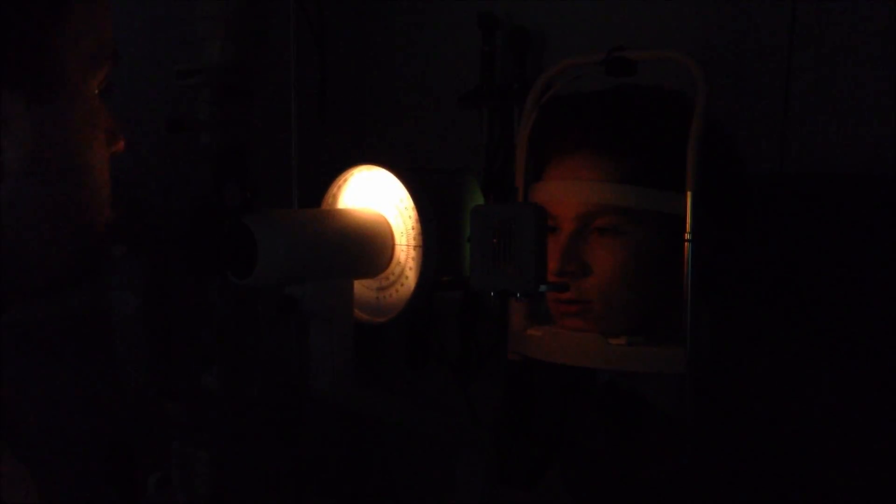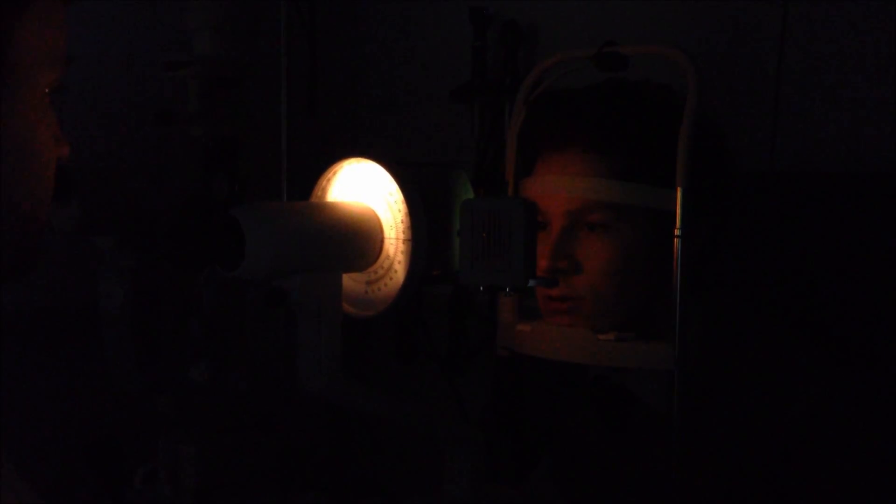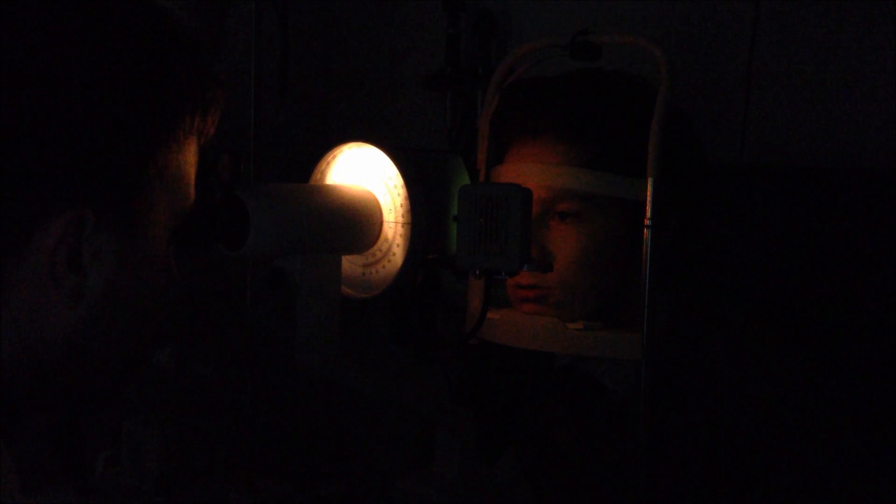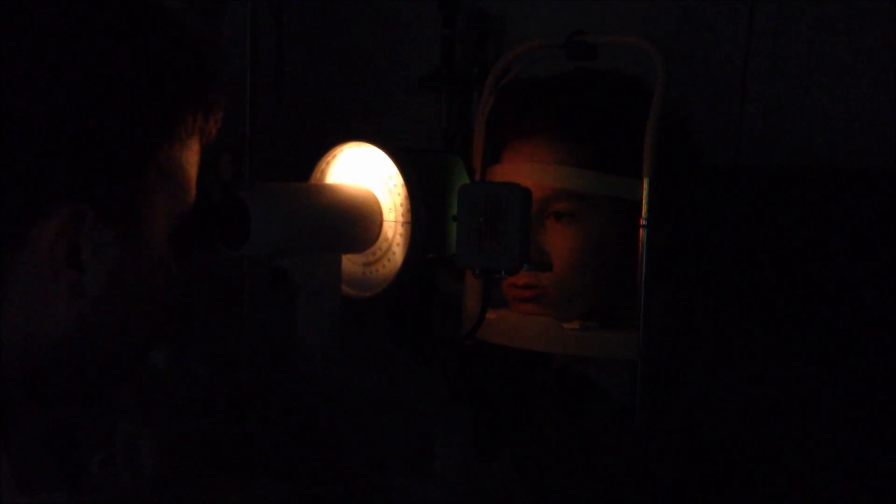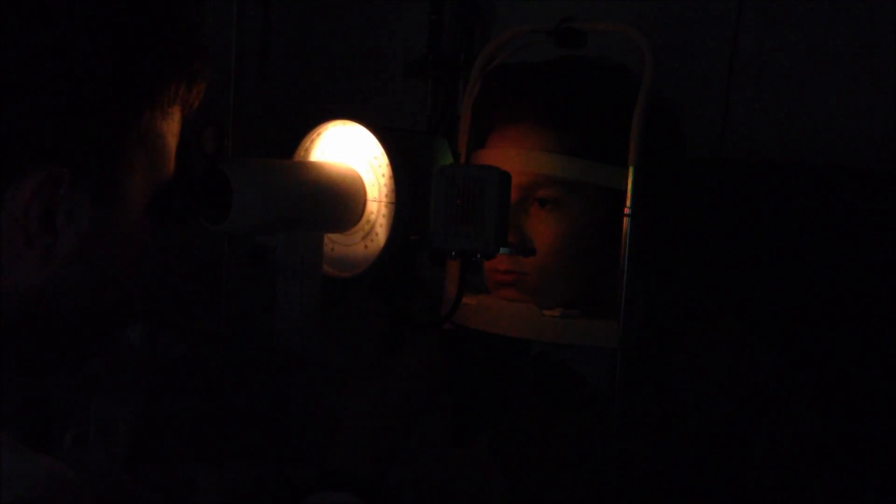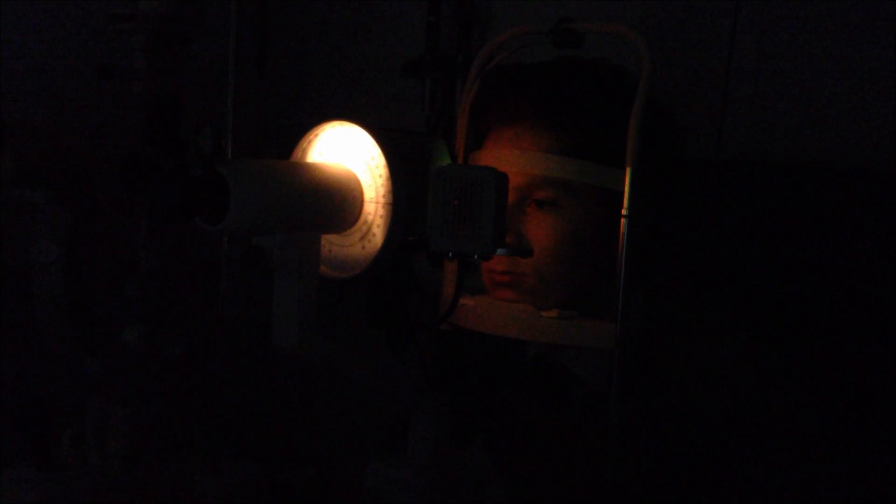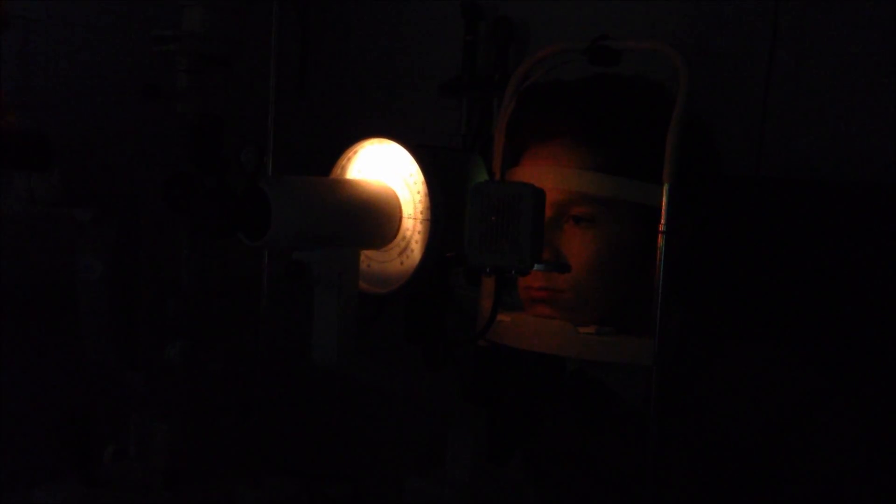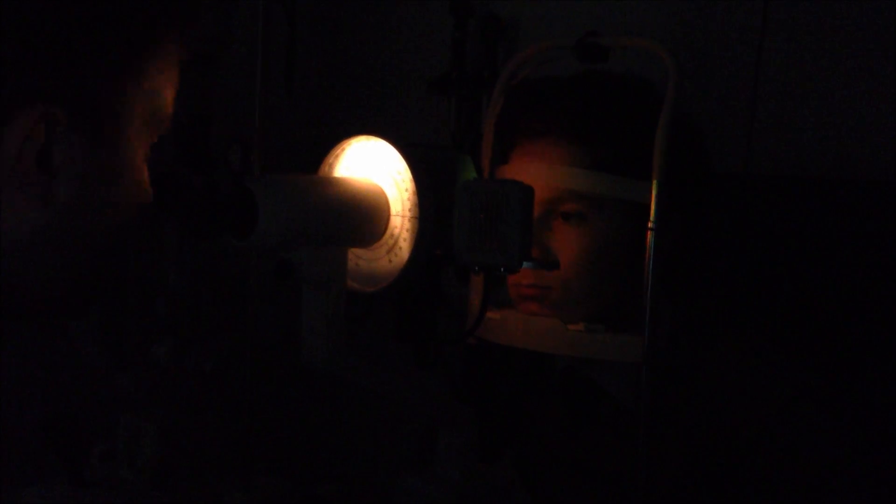Now we've got the patient up, we can take the reading. The first thing we'll do is take the horizontal K's. You just want to look in, slowly come closer, and then you want to just bring the mires into focus, and then you just use this dial here, just to bring them closer together, and you just bring it so they're just touching ever so slightly. Then what you want to do is just read the curvature off from where the eyepiece is, so the eyepiece is always where you should be reading your curvature from. If you look through here, you can see that's about 7.7.